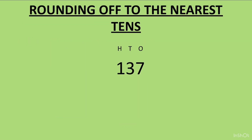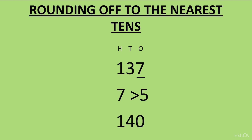Now let's see how to attempt a question in your copy. The number is 137 and we have to round it to the nearest tens. We look at the digit at the ones place, which is 7. We compare 7 with 5 — since 7 is greater than 5, we change the 3 at the tens place to 4, and everything to the right becomes 0. So 137 rounds off to 140.